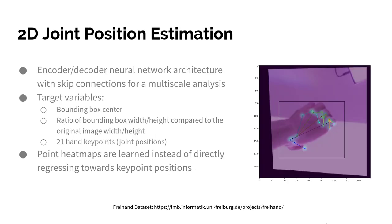2D key point joint position estimations are accomplished via an encoder-decoder neural network architecture. This neural network will have skip connections for multi-scale analysis, allowing high accuracy for both large and small hands relative to the image frame. Target variables include bounding box center, 21 hand key points — 1 for the wrist and 4 for each finger — as well as the ratio of the bounding box's width and height compared to the original image's width and height.